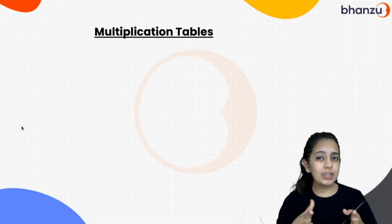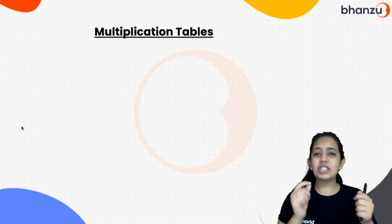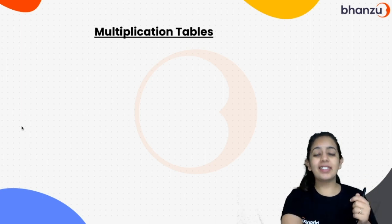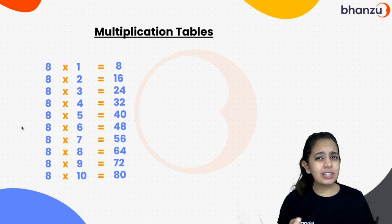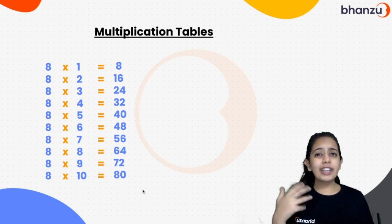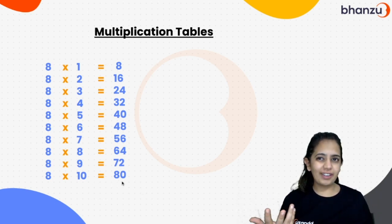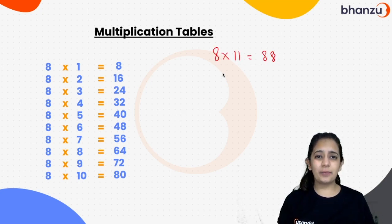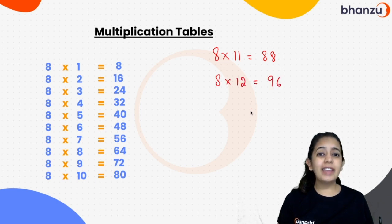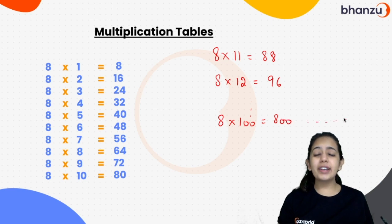So how does it go? It goes like 8 ones are 8, 8 twos are 16, 8 threes are 24, 8 fours are 32, 8 fives are 40, and so on. Shall we stop till 8 tens are 80? Or can we continue further? We can! We can also write 8 elevens are 88, 8 twelves are 96, and then we can also take 8 times 100 as 800, and so on.